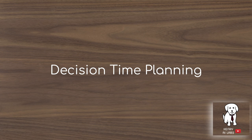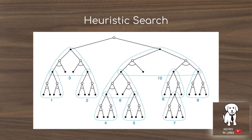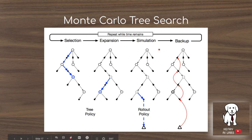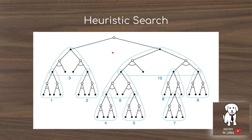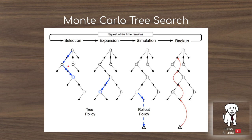Previously discussed algorithms are background planning — using planning to simulate experience and update value functions and policy offline. Decision-time planning, by contrast, simulates experience only to inform the current decision, without updating value functions or policies persistently. Heuristic search is one example: from a root node, sample actions, build a lookahead tree, find the leaf with highest value, back-propagate it, and take that action. Monte Carlo tree search — a key idea behind AlphaGo — extends this by storing the intermediate tree across decisions to reuse computation.